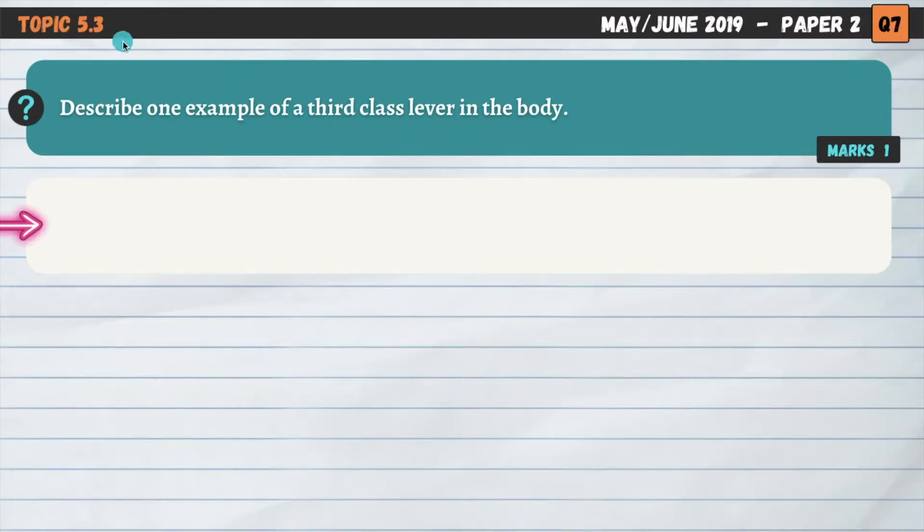Topic 5.3 again. Describe one example of a third class lever in the body. So this is almost exactly the same questions we just looked at for the second class lever. We had to provide an example. The example here is when kicking a football, flexion occurs at the hip joint. That is an example of a third class lever.